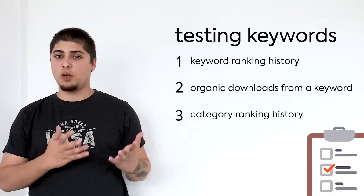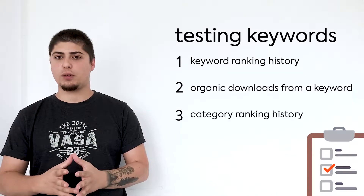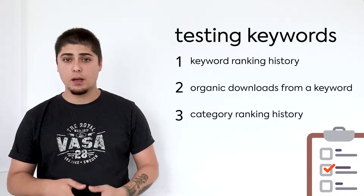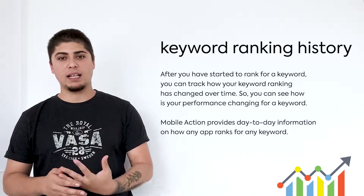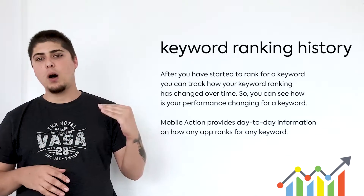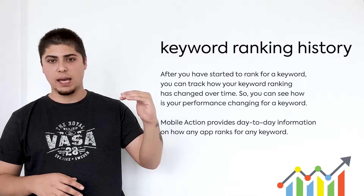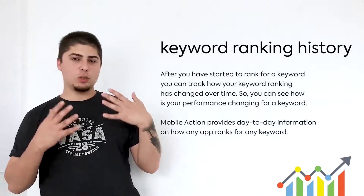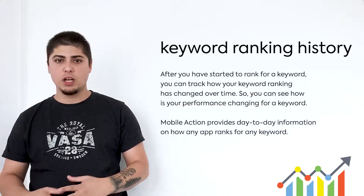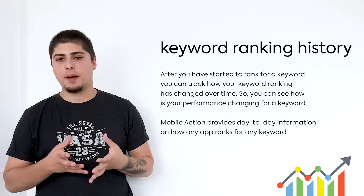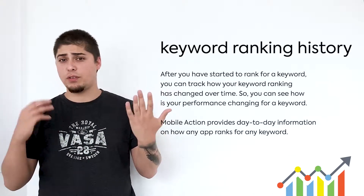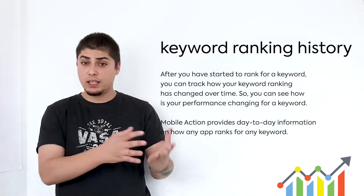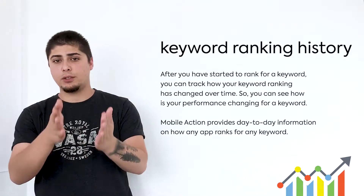There are a couple of different ways you can measure your performance. First and foremost, probably the most important step, you should check your keyword ranking history — this is how your rankings have changed over time for a specific keyword. If you started to focus on a couple of keywords, you can see how you performed over a time span of two to three weeks. If there is a rapid increase in your keyword rankings, that means you made the right choice.